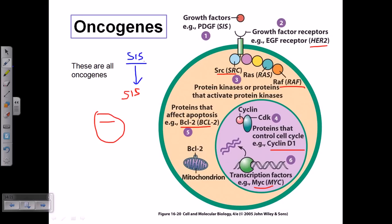But when these genes are altered due to any kind of agents — such as chemical mutagens or physical agents like radiation — this type of modification in those genes can lead to the generation of cancerous effects. The normal cell will then become a cancerous cell, and those genes will be converted into oncogenes. The picture courtesy is from Cell and Molecular Biology, 2005, copyright by John Williamson.